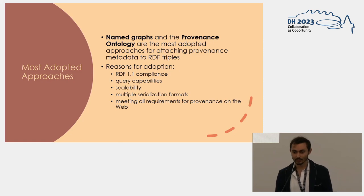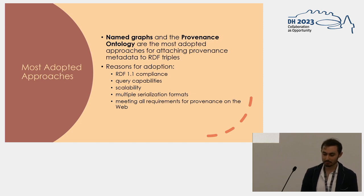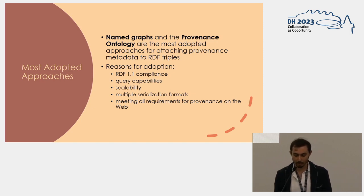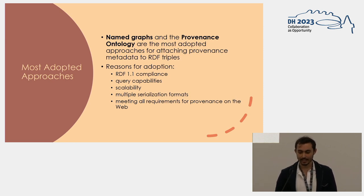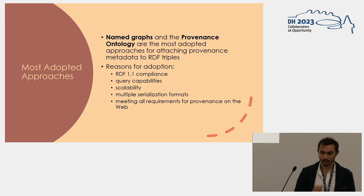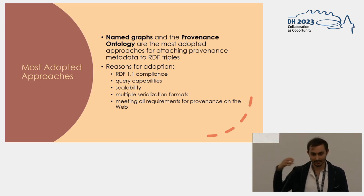Today, the most adopted solutions are named graphs and the provenance ontology PROV-O. Named graphs are scalable and serializable in all possible RDF formats — JSON-LD, TriG, et cetera. The provenance ontology was created to meet all the requirements for provenance on the web, and you can also extend it to customize it. Those were the reasons for their success.